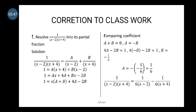Looking at the constants: on the right-hand side it is 4a minus 2b, and the constant on the left-hand side is 1. Therefore 4a minus 2b equals 1.